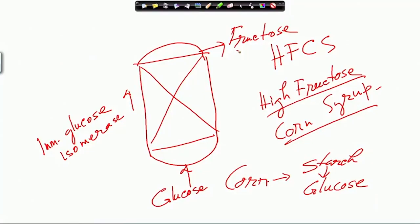The problem asks: if glucose solution is passed through the immobilized glucose isomerase column and 60% is converted to fructose, what should be the height of the column? We need to design the column and determine the required height for this desired conversion.